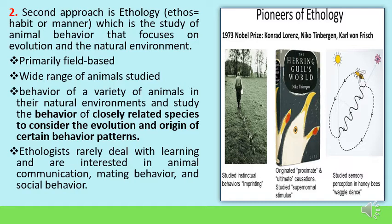The second approach is ethology — meaning the study of habit or manner. Ethology is the study of animal behavior focusing on the evolution and natural environment of an organism. These are primarily field-based studies and a wide range of animals can be studied. The leaders of this approach were Konrad Lorenz, Niko Tinbergen, and Karl von Frisch, who were awarded the Nobel Prize in Physiology or Medicine in 1973. These three scientists were the pioneers of ethology.